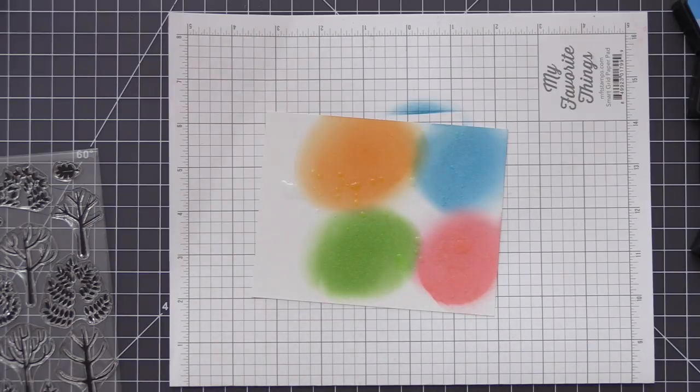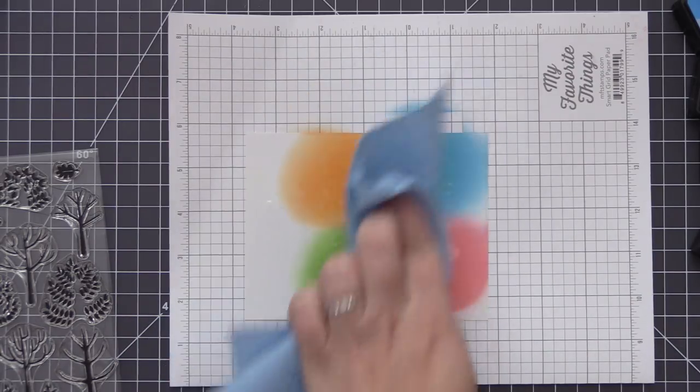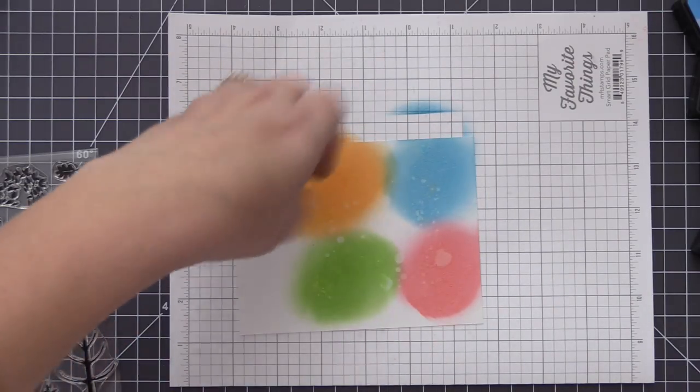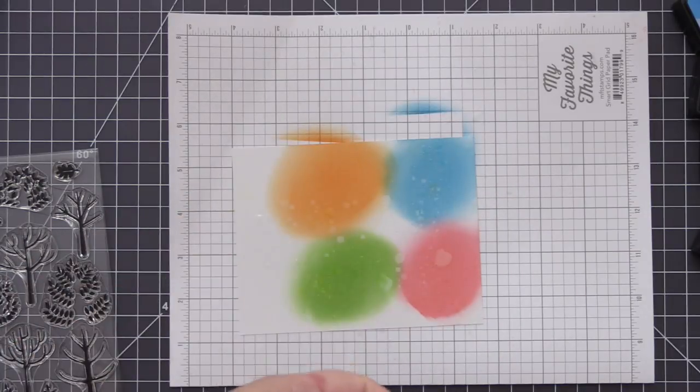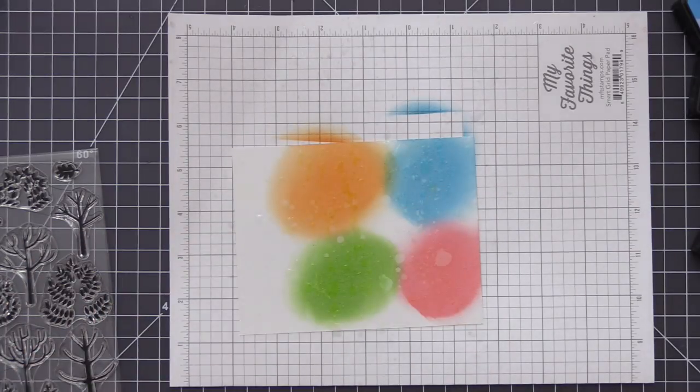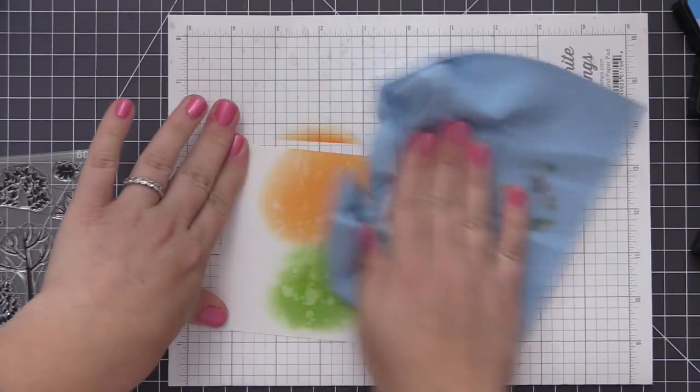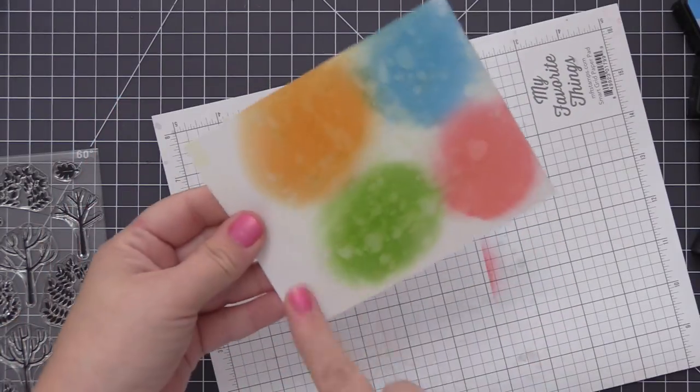Before I do any die cutting I want to add a little bit of distress detail to the squares so I'm going to add some water over top of my distress ink and then I just use a paper towel to dab that water up and it just lifts up the ink and leaves me with that white textured look to the ink background.